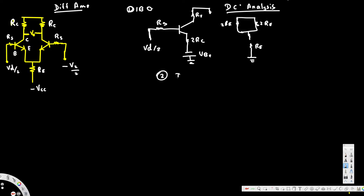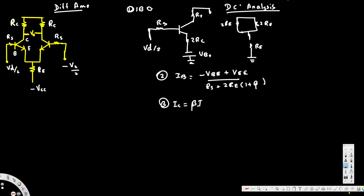In the DC analysis, we are going to calculate Ib. Ib is basically: negative Vbe plus Vw, divided by Rs plus 2Re times (1 + beta). We also know that Ic is equal to beta times Ib — this is the general equation.